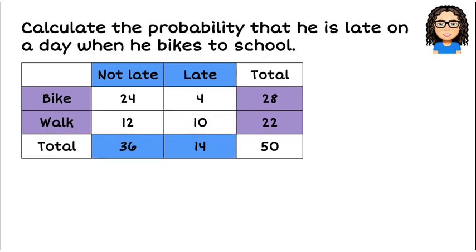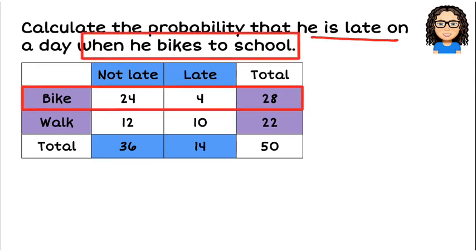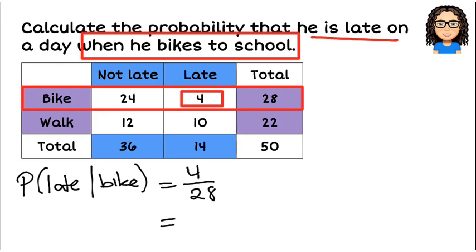Let's have a look at this question. Calculate the probability that he is late on a day when he bikes to school. So again, here's our conditional, when he bikes to school. So we're just looking at the days where he's biked. So there were 28 days that he biked and from those there were 4 times that he was late. So the probability of being late given that he biked to school is 4 out of 28 or as a decimal, that would be 0.1429.